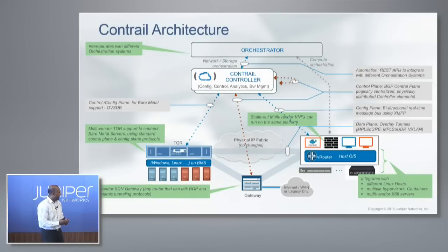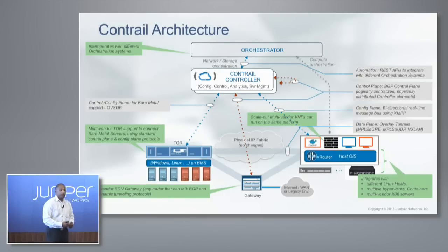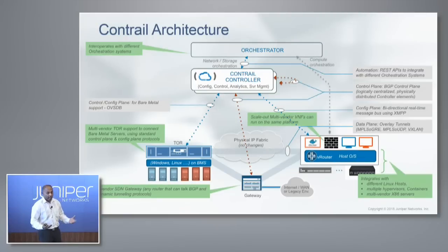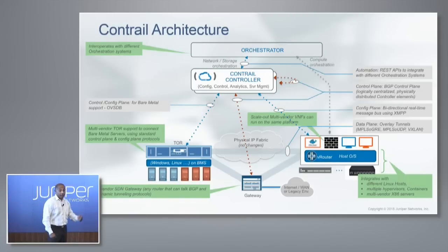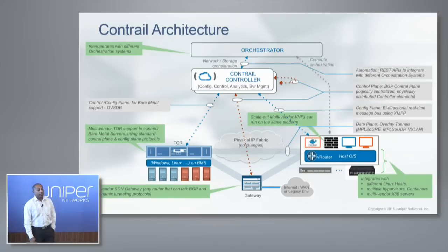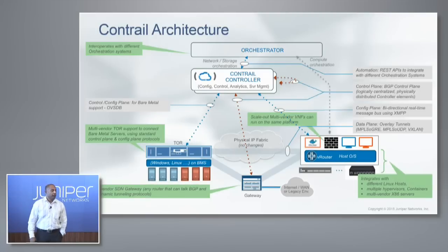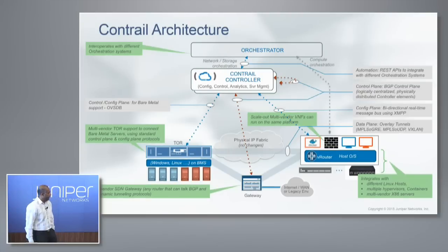We integrate with different hypervisors such as KVM and ESXi, different kinds of x86 servers, different types of gateways, and top-of-rack switches using standard OVSDB protocol. We also support different orchestrators, and you can have different kinds of VNFs — virtual network functions — as part of the service chain, not just those provided by Juniper but also by third-party vendors. The whole environment is made very multi-vendor.